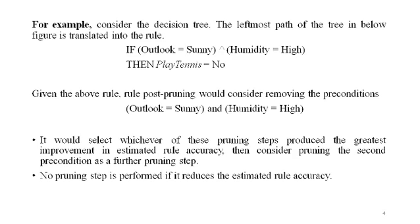For large datasets, the pessimistic estimate is very close to the observed accuracy because the standard deviation is very small. However, it grows further from observed accuracy as the size of the dataset decreases. Although this heuristic method is not statistically valid, it has been found useful in practice.